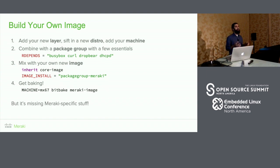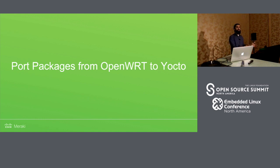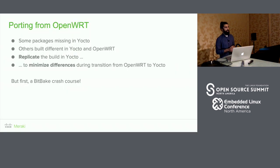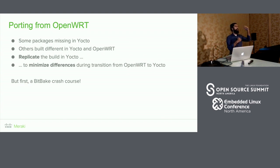Of course it didn't look much like our Meraki products — it didn't have our proprietary stuff, our packet processing engine, or all our packages. And the packages that were there might be configured or built differently. So the next thing to do was to port packages from our existing OpenWRT-based build system to our new one. There are several packages missing in upstream Yocto — either because they're proprietary or the community doesn't use them often — and we also needed to modify existing recipes to our needs, while keeping the delta between the old and new build systems minimal.